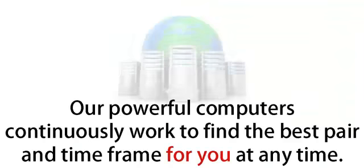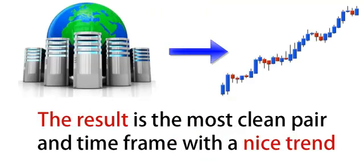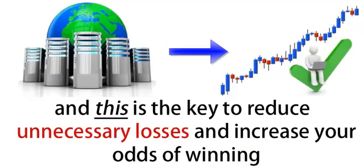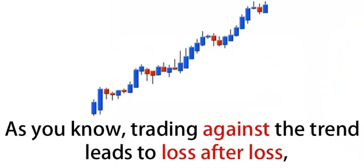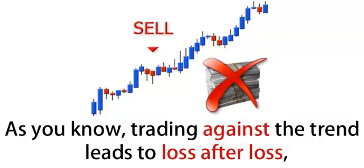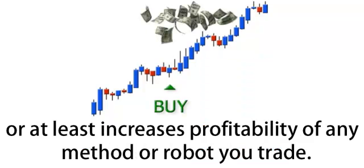So how does it work? Our powerful computers continuously work to find the best pair and time frame for you at any time. The result is the most clean pair and time frame with a nice trend, and this is the key to reduce unnecessary losses and increase your odds of winning by simply following the best trend. As you know, trading against the trend leads to loss after loss, but trading with the trend leads to profits, or at least increases profitability of any method or robot you trade.